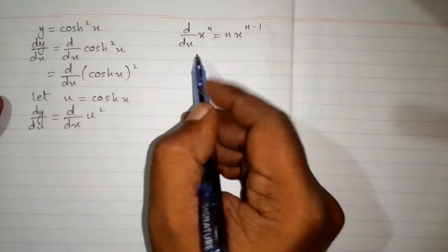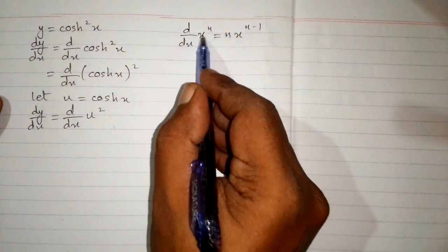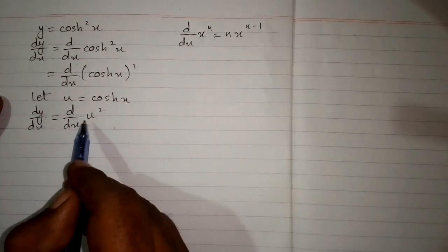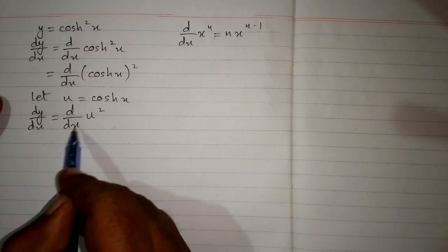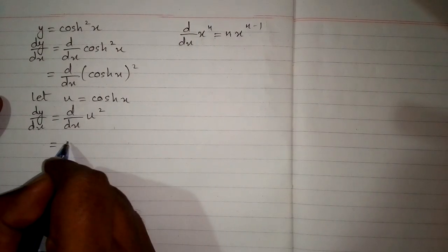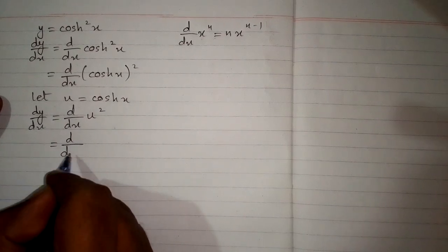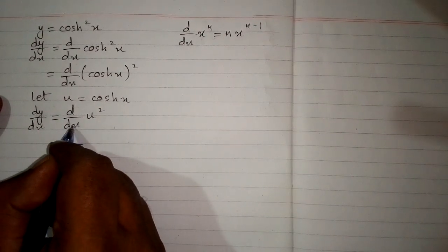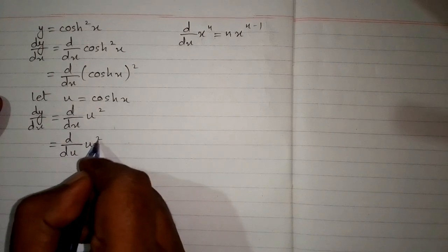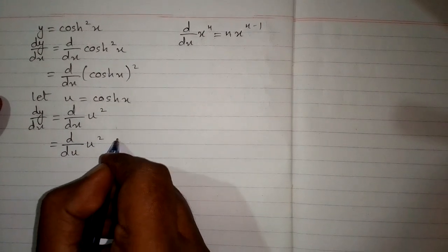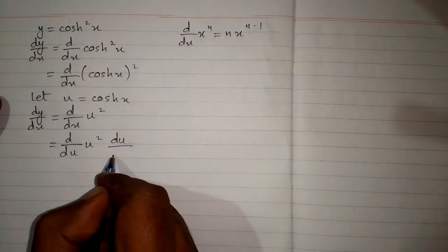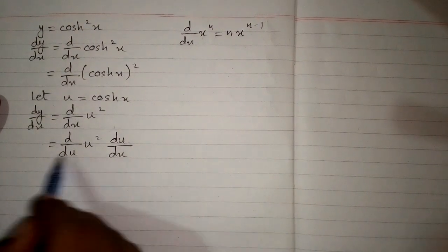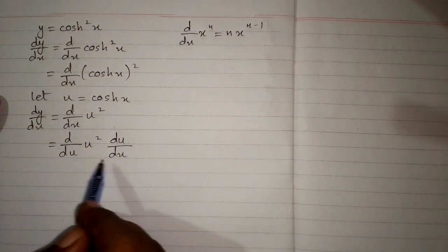Now we can apply this formula, but the variables must be the same. So in order to do that, we will write du in place of dx so that we can differentiate u square, but then we will multiply it by du by dx to balance this. And this is called the chain rule of differentiation.